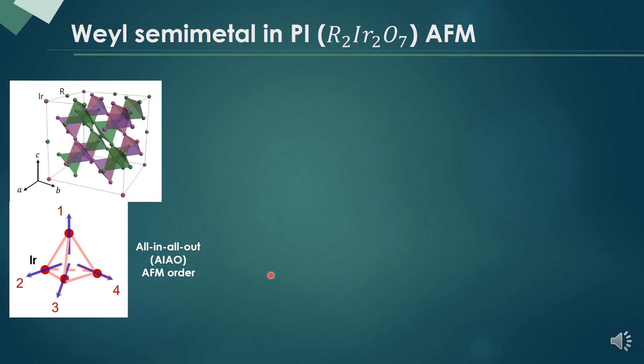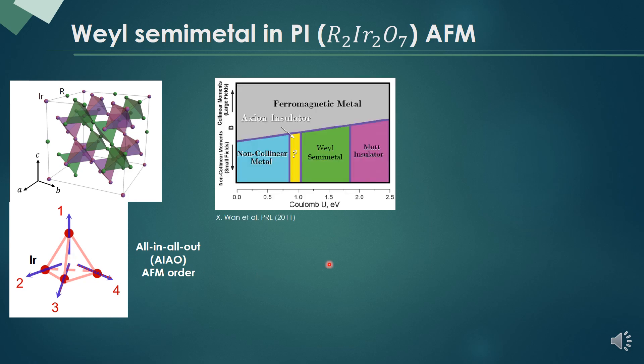The feature of pyrochlore iridate antiferromagnet is that it is the first material that Weyl semimetal is predicted to exist.